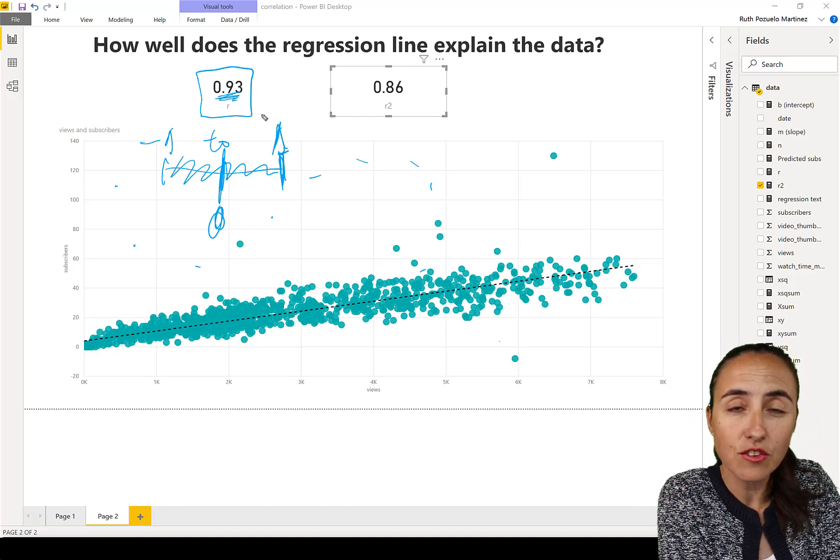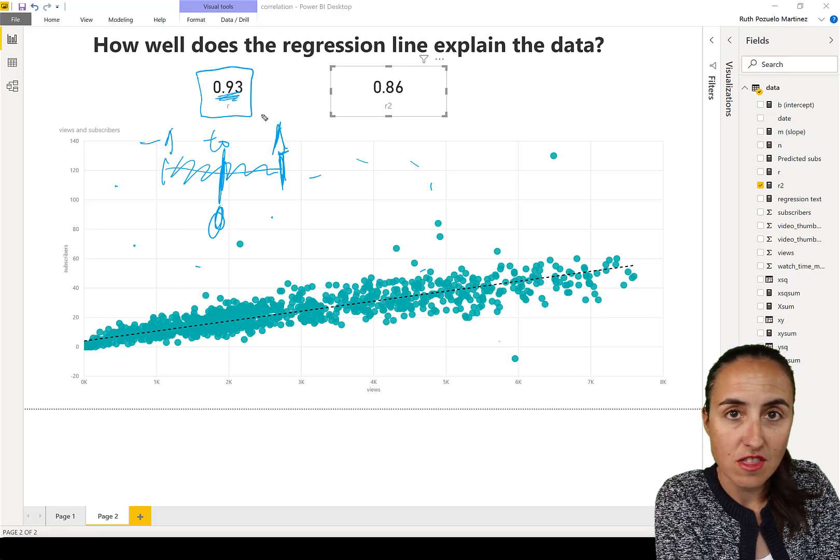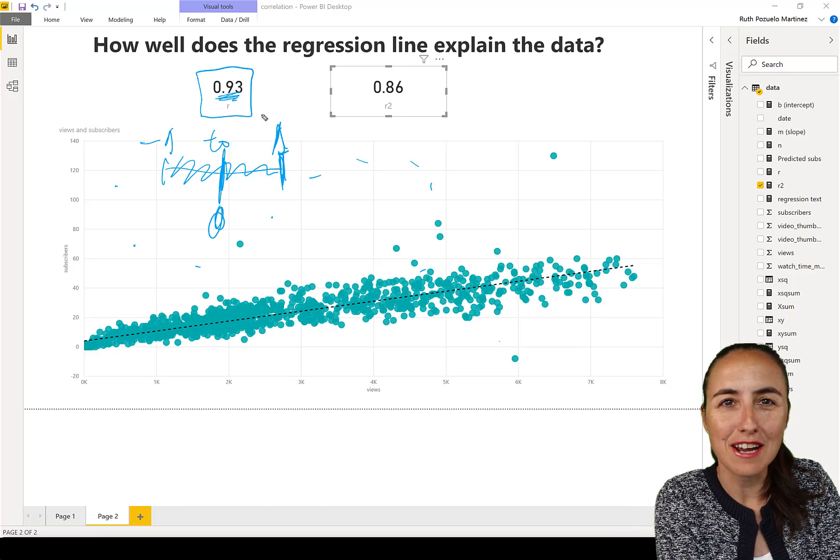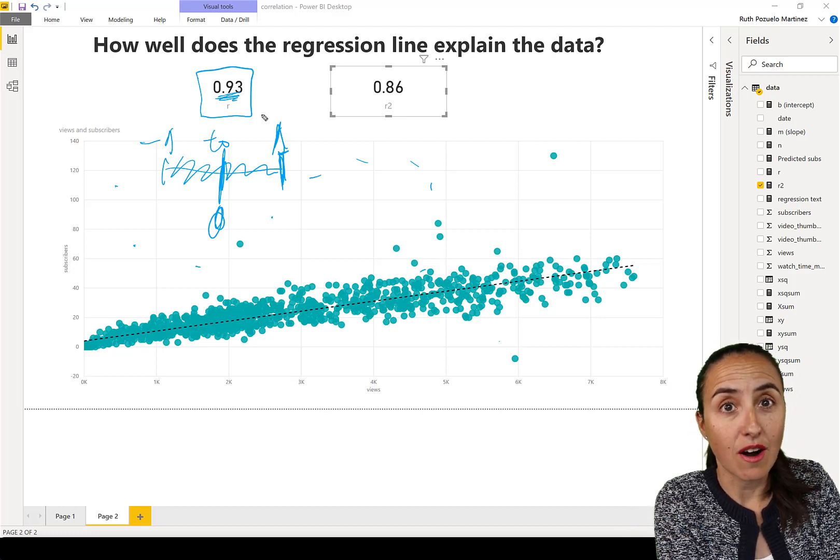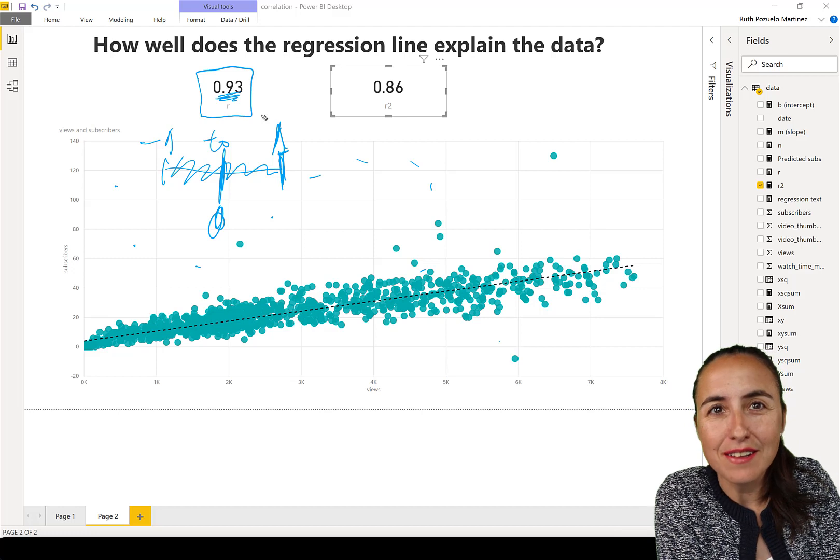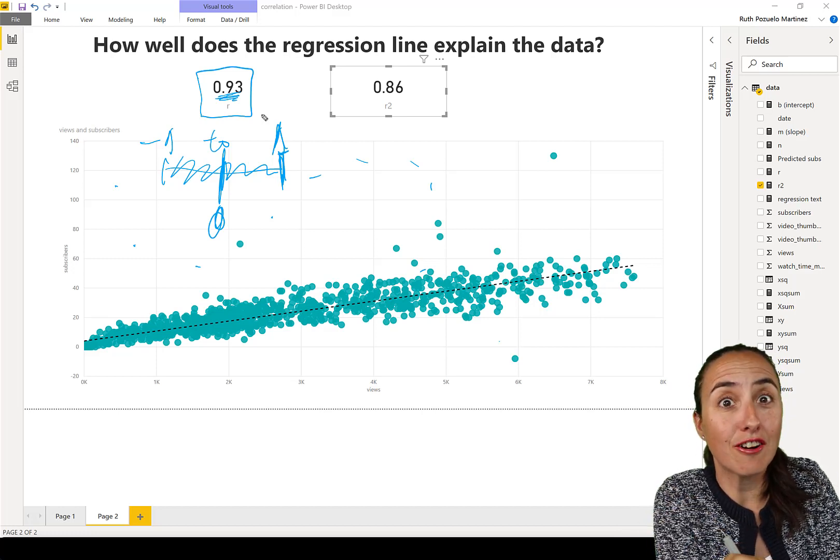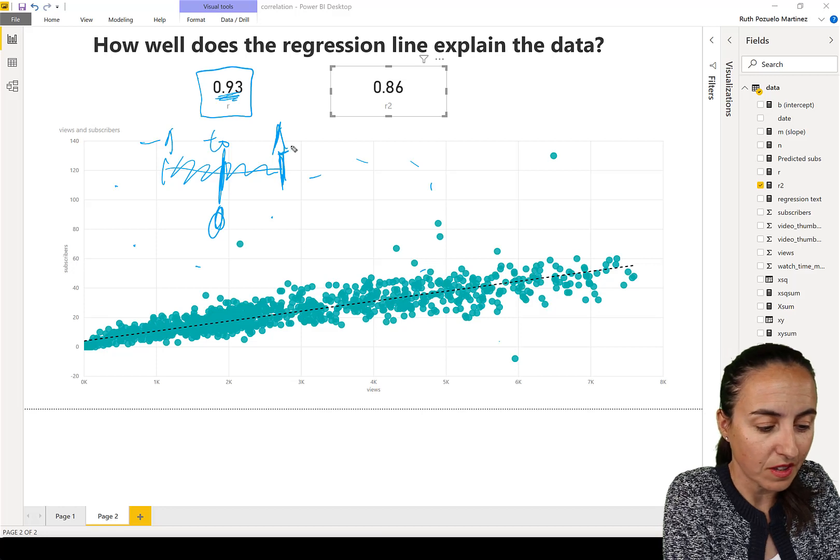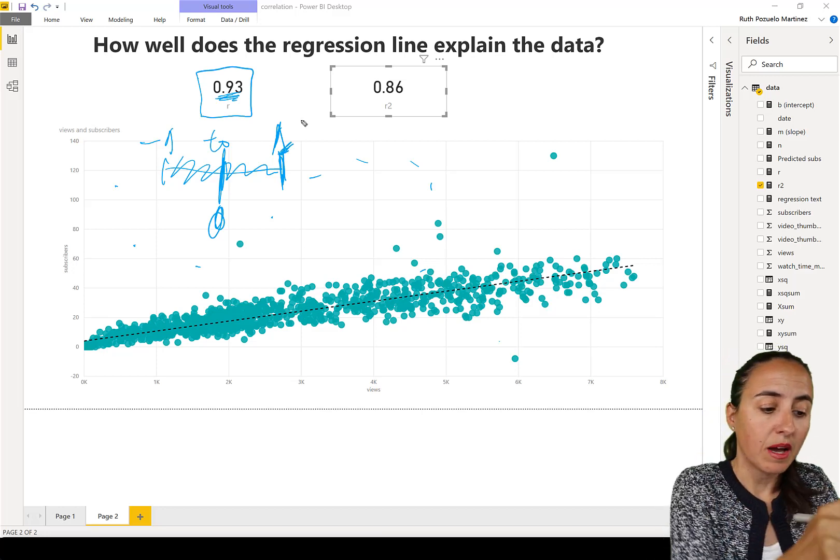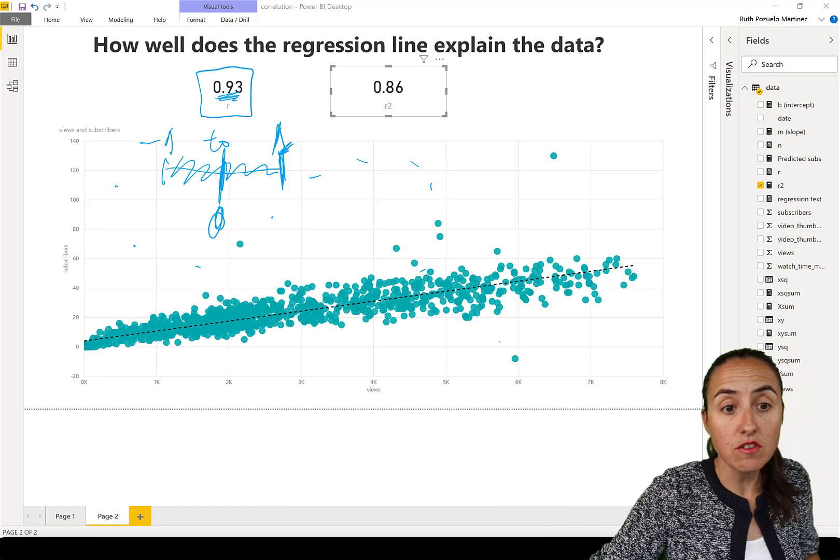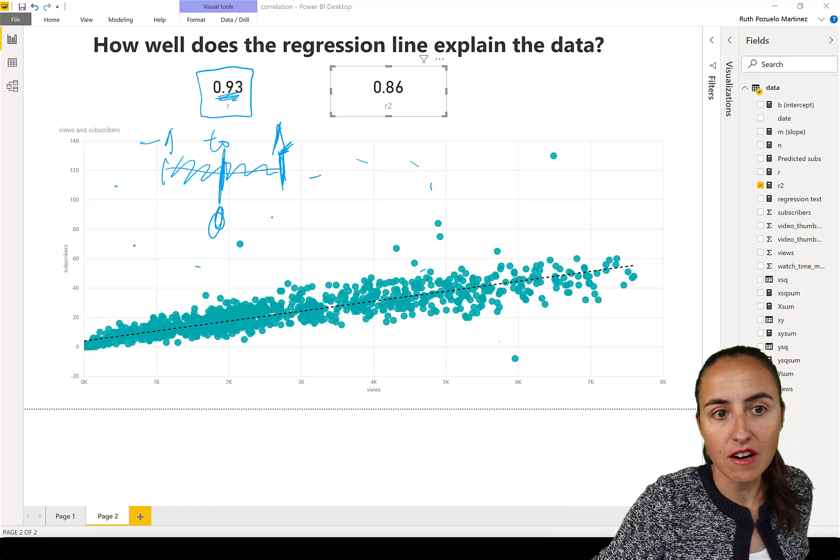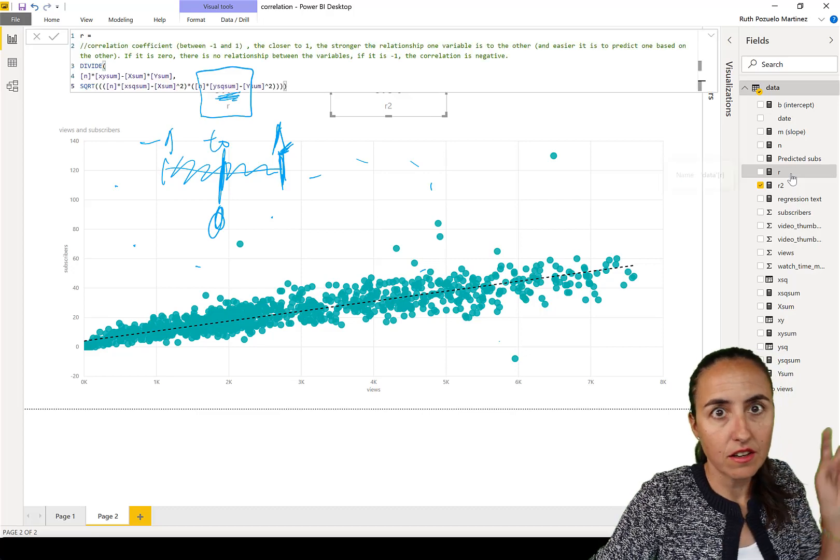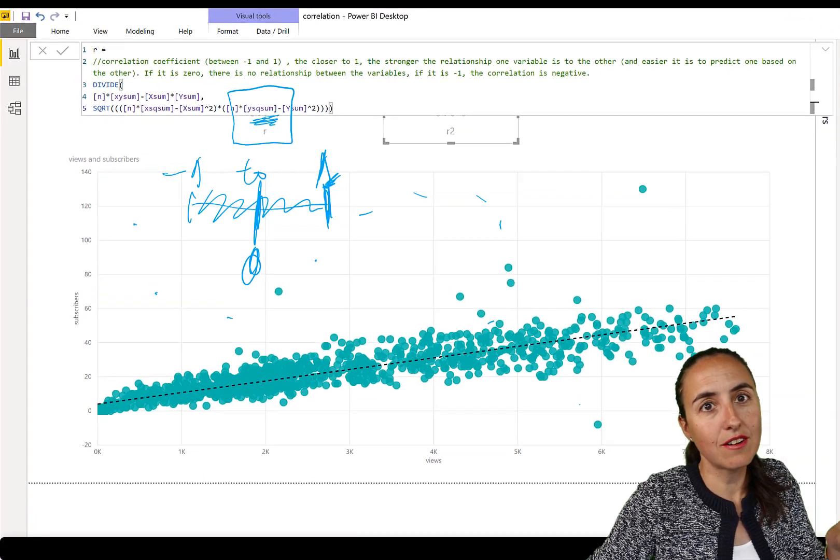Look at that. We got a 0.93 r value for this which means there is strong, strong, strong relationship between number of views and number of subscribers. Which we knew that, right? You know that a channel with a lot of views often have a lot of subscribers too. So it tells us how strong the relationship. By calculating r we know now that it is a very strong relationship.